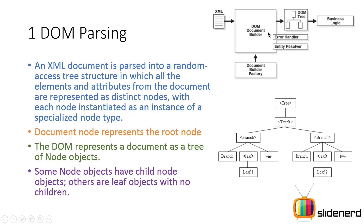Some nodes have children, others don't. Now if there are any errors, they need to be handled by something called an error handler, which you have to define in your code. We'll look at how to define that. Ultimately, from this DOM tree you use certain methods to get the data out of it.